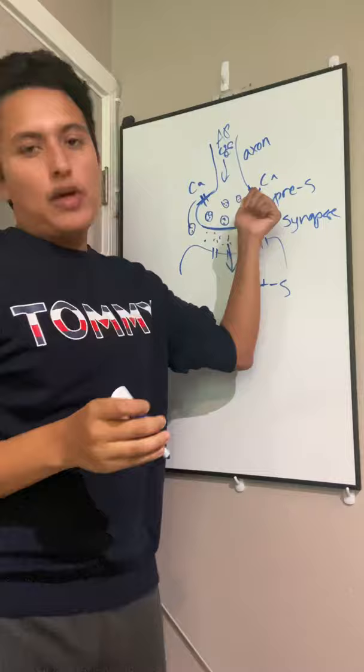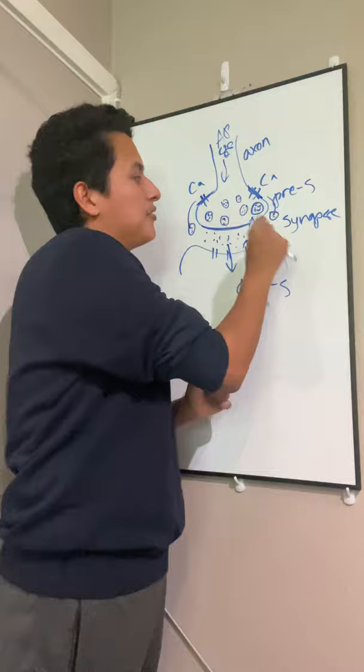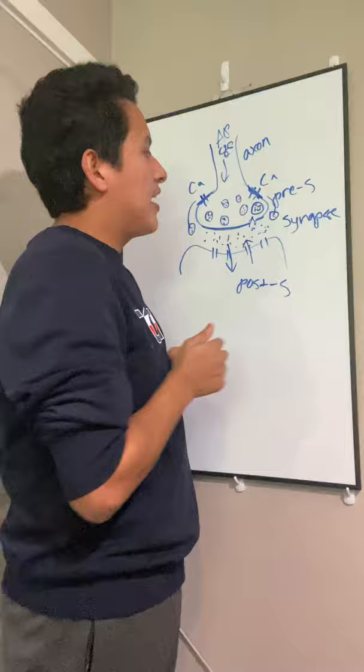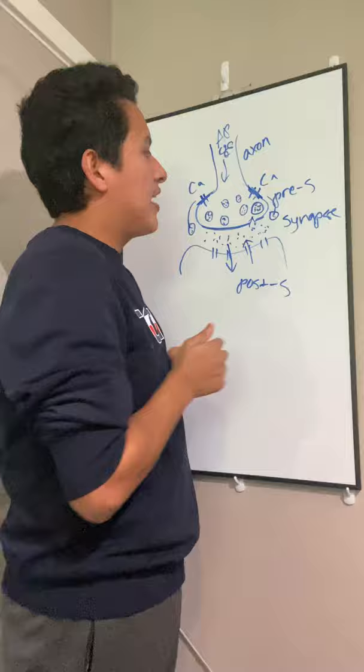This allows steps five through six to reset everything, allowing the whole process of steps one through four to occur again. Steps five through six are resetting everything for the process to happen once again. And that is my explanation.